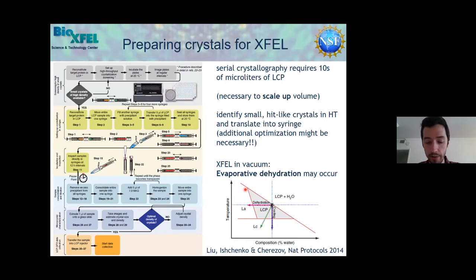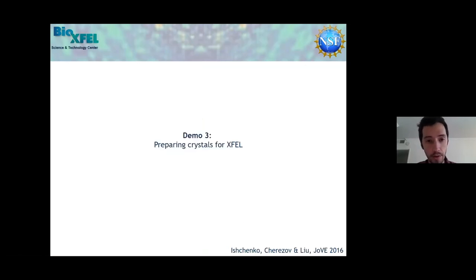Additionally important is that at a lot of XFEL beamlines, the sample delivery chambers operate under vacuum to reduce background during sample collection. When we inject LCP into vacuum, evaporative dehydration might occur that causes the LCP to go into crystalline lamellar phase, potentially damaging crystals but also causing strong powder diffraction. What we can do to prevent that is add shorter chain lipids such as 7.9 MAG before injection. As you remember from the phase diagram on one of the earlier slides, 7.9 MAG is more resilient to low temperature, and therefore we can keep our sample in LCP when we inject it into vacuum.